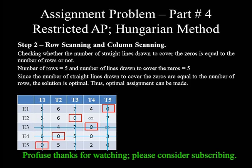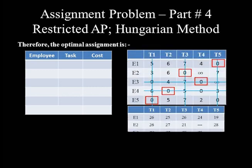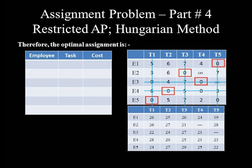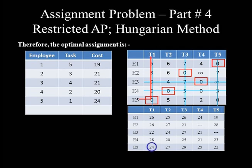An optimal assignment following the zeros inside the rectangles can now be made. Operator 1 is assigned to Task 5 at a cost of 19. Operator 2 is assigned to Task 3 at a cost of 21. Operator 3 is assigned to Task 4 at a cost of 21. Operator 4 is assigned to Task 2 at a cost of 20. Operator 5 is assigned to Task 1 at a cost of 24.